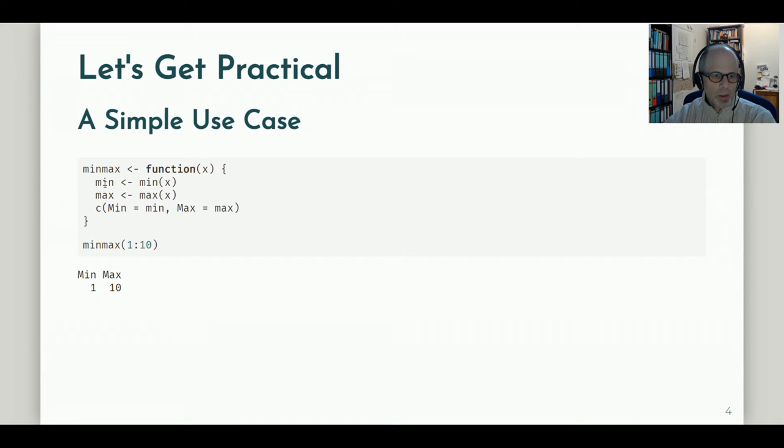Note that I could do it in a one-liner in the function body, but for the sake of clarity, I first calculate the minimum and assign it to an object and the maximum. Then I concatenate these two calculations together to form the result vector, and I label this with capital letters Min and Max. So I can use that on the vector sequence from 1 to 10.